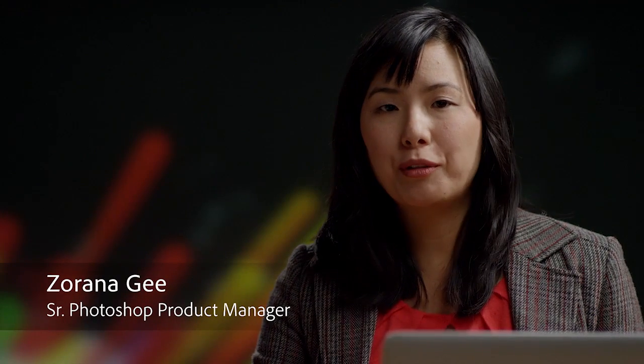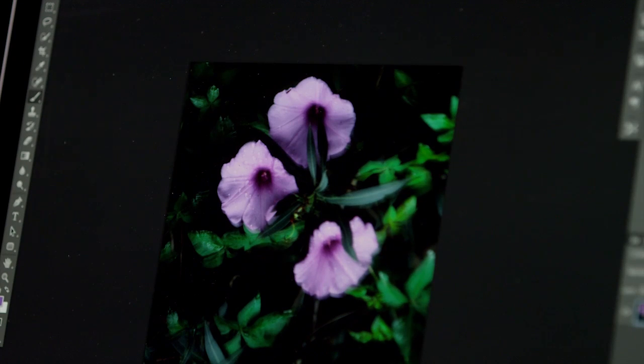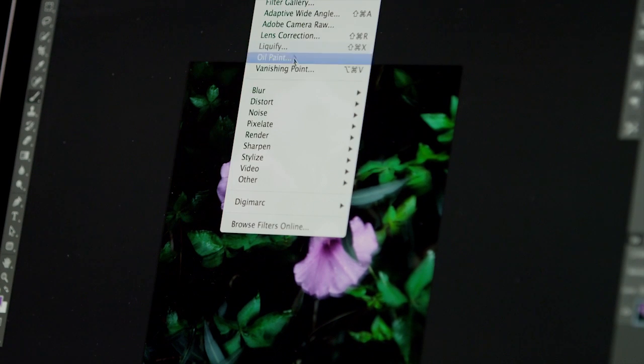Photoshop CC includes a breakthrough way to restore sharpness to images blurred by camera shake. Often when you're taking an image with slow shutter speed or perhaps a long lens, your images may come out soft or blurred by camera movement.